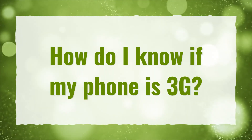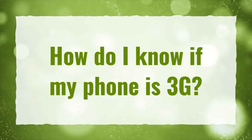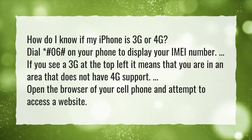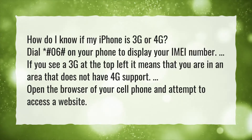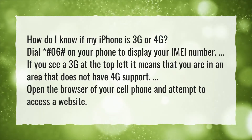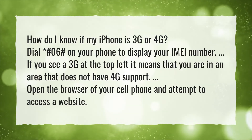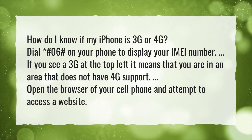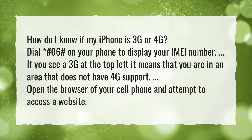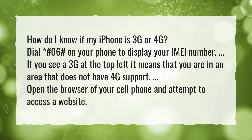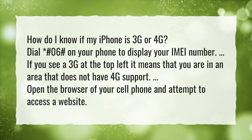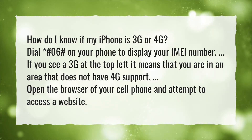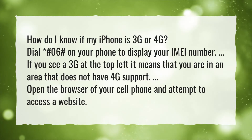How do I know if my phone is 3G? How do I know if my iPhone is 3G or 4G? Dial *#06# on your phone to display your IMEI number. If you see a 3G at the top left, it means that you are in an area that does not have 4G support. Open the browser of your cell phone and attempt to access a website.